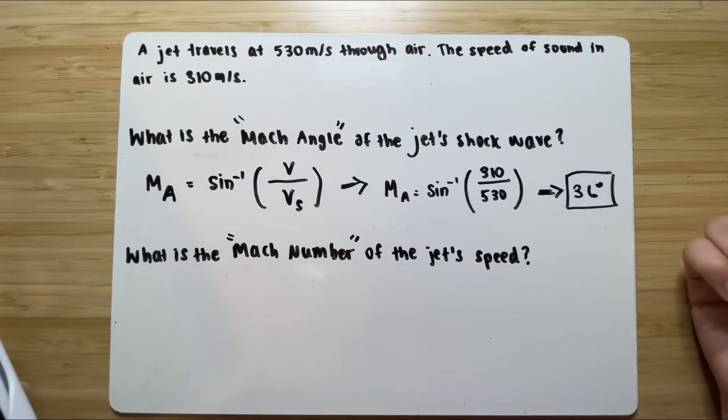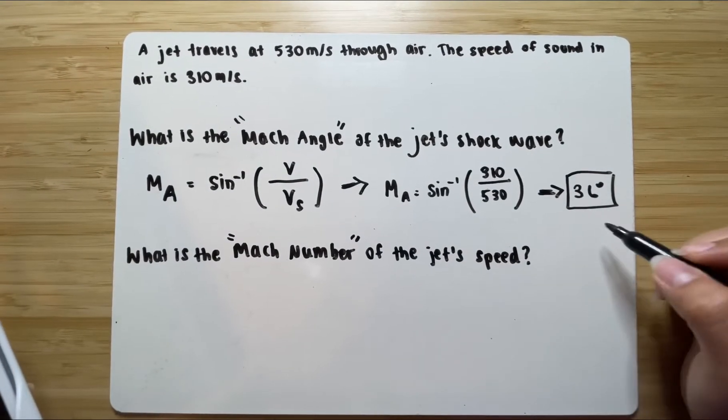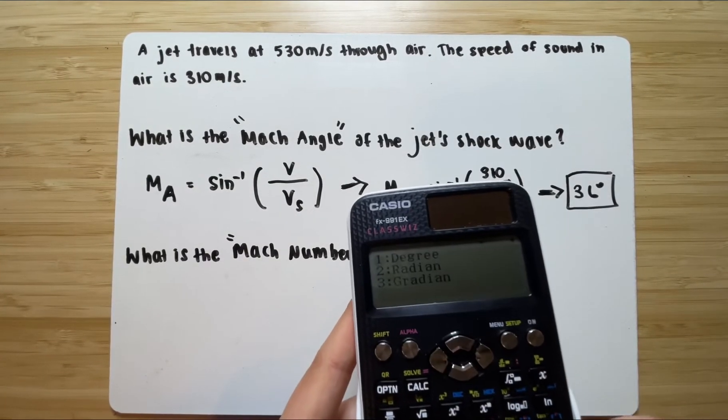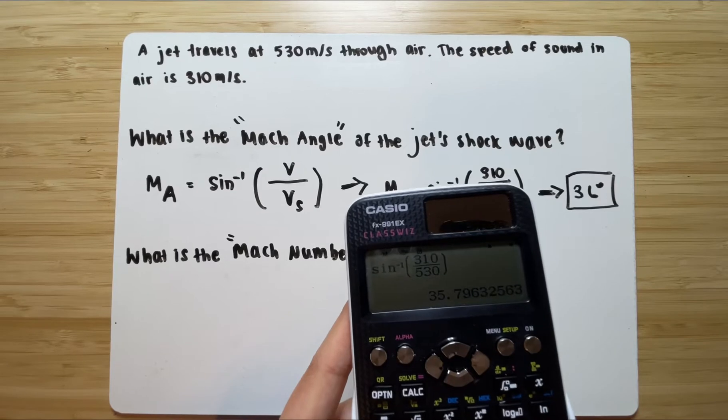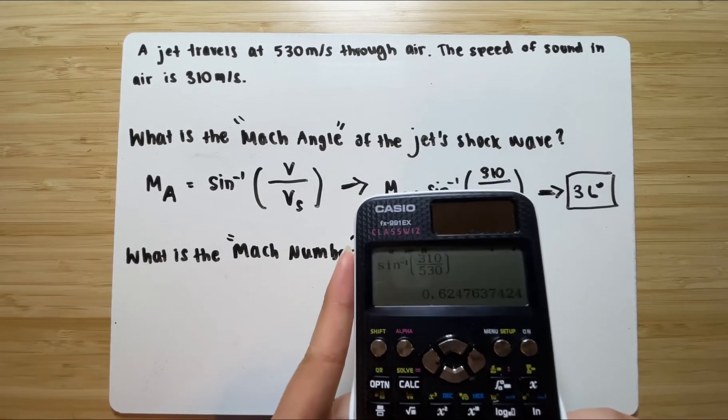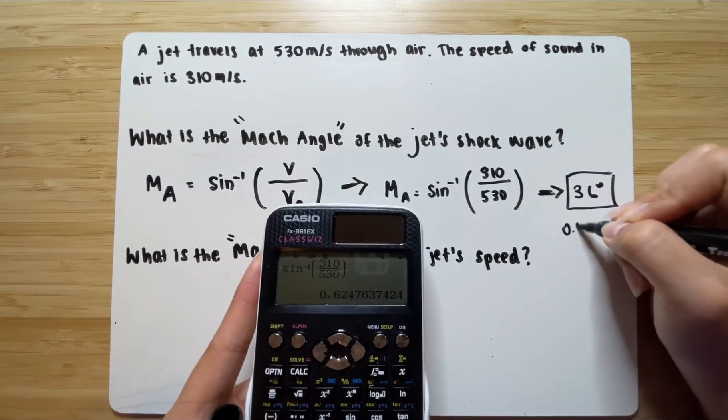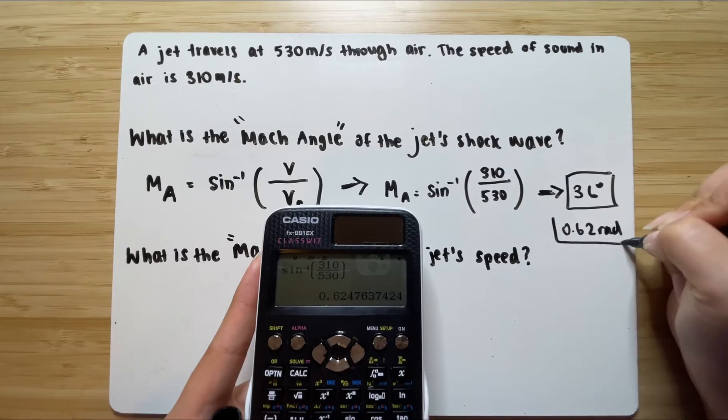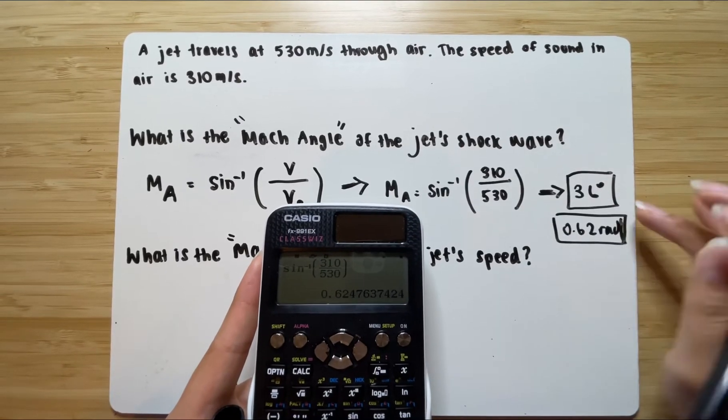You could use radians, but then you'll have to write the number in radians. For example, if I were to write this answer in radians, it would be 0.62 radians. Both answers are acceptable.